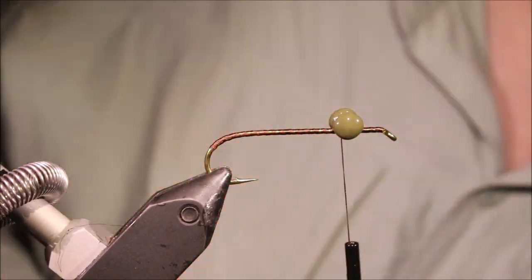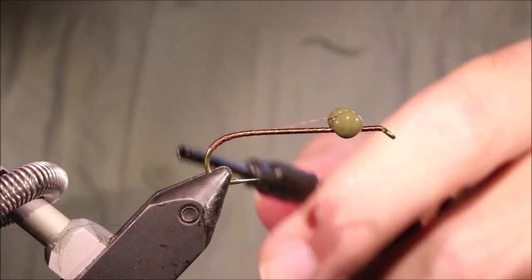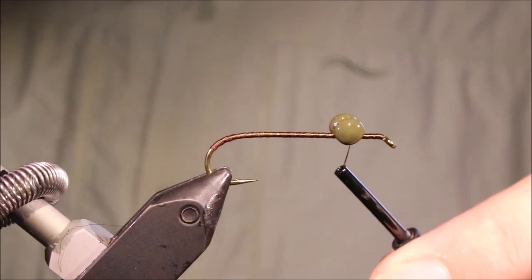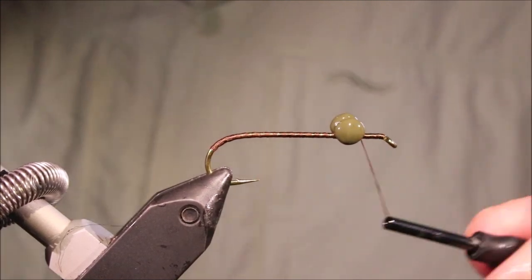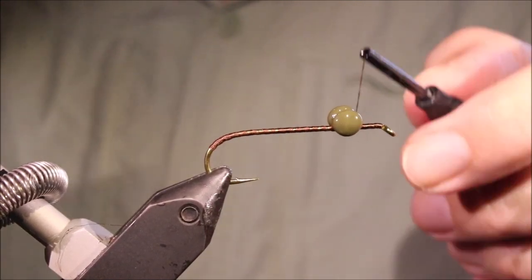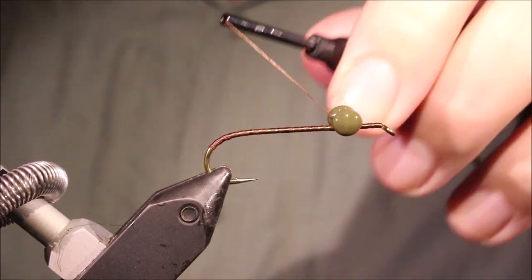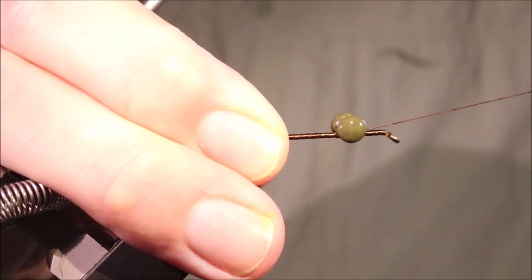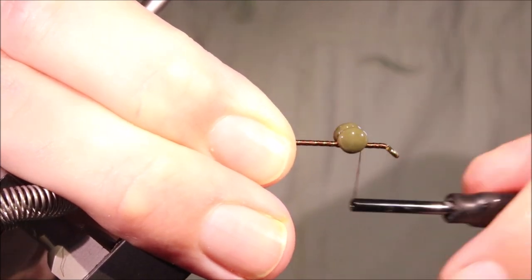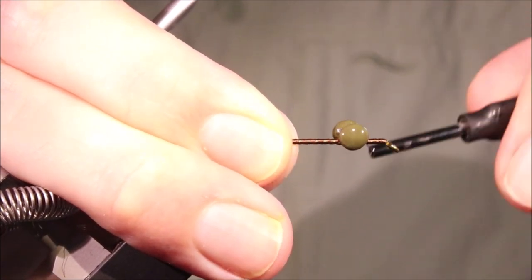Just check your eyes are sitting nice and square, 90 degrees to the shank, 90 degrees to the bend and then just come in, top and bottom of them, over and under and really lock them in.